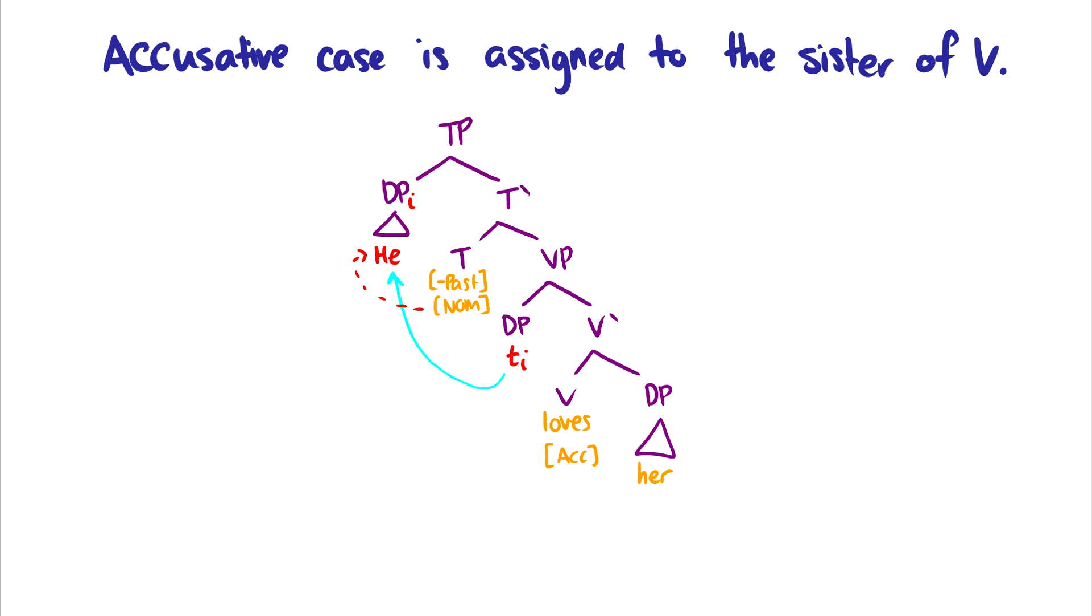So how do we get accusative case? Well, accusative case is assigned from the verb. And the sister of V gets accusative case. Let's just quickly look at what's happened so far. We have the sentence, he loves her. So he starts out as a specifier VP to get a theta role from loves. And then in order to get nominative case, it moves up to spec TP, where T gives it nominative case. So now this he has nominative case from T.